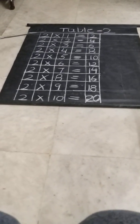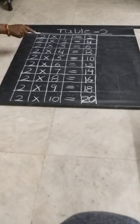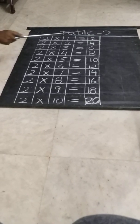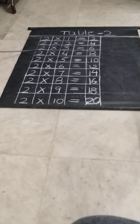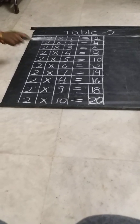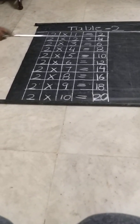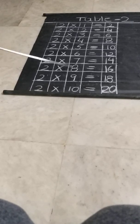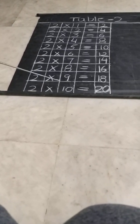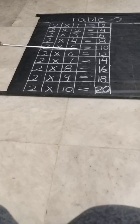Children, repeat. Two 1's are 2. Two 2's are 4. Two 3's are 6. Two 4's are 8. Two 5's are 10. Two 6's are 12. Two 7's are 14. Two 8's are 16. Two 9's are 18. Two 10's are 20.